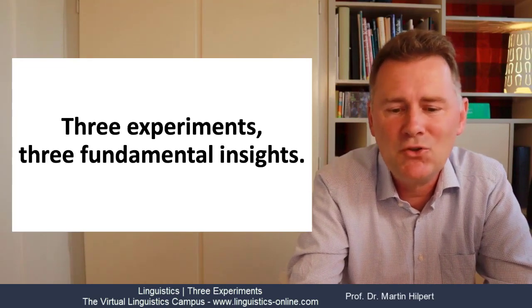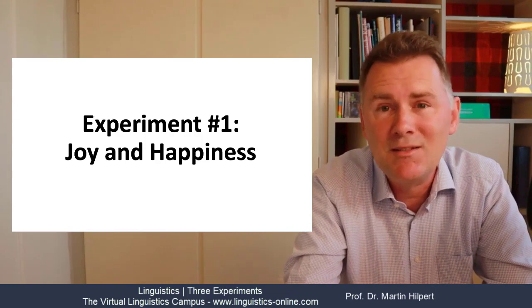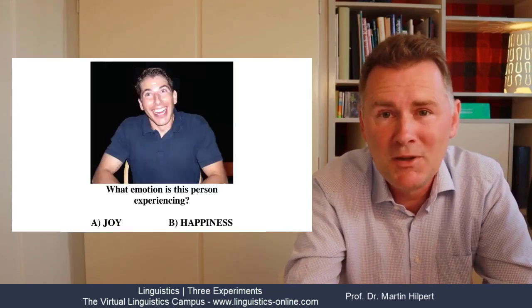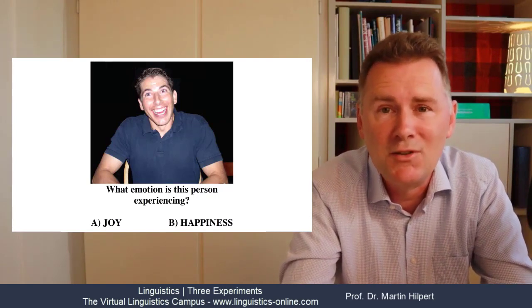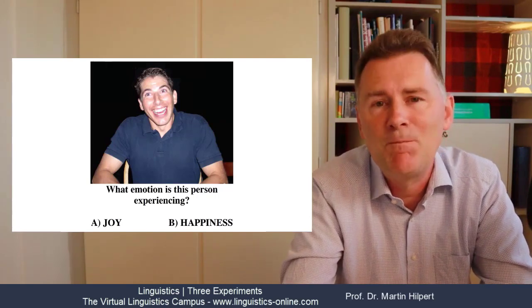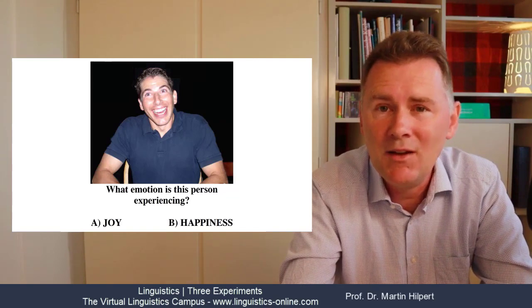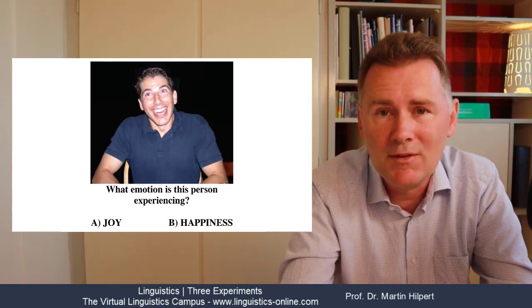Experiment one is about joy and happiness. The design of the experiment is extremely simple. The participants were shown a picture of a person and all they had to do was answer one simple question: what emotion is this person experiencing? Is it joy or is it happiness?